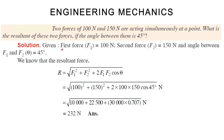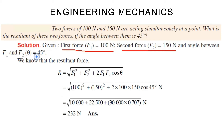The given values are: the first force F1 is equal to 100 newton, the second force F2 is equal to 150 newton, and the angle between F1 and F2 is given as 45 degrees.